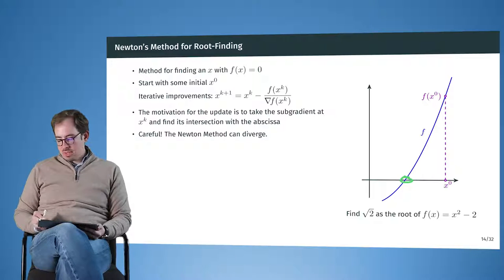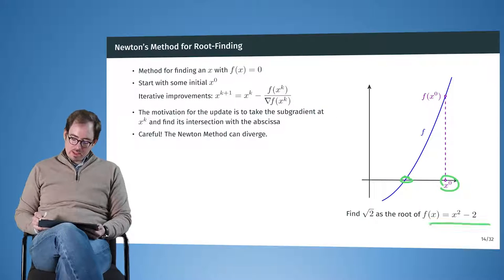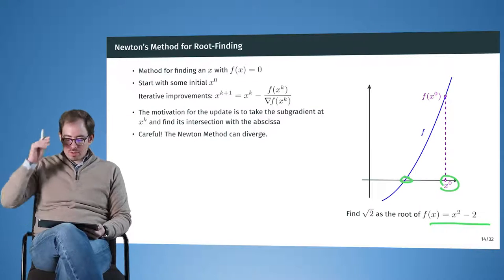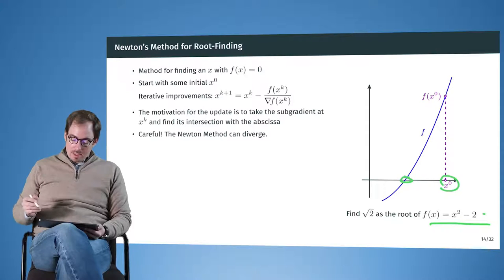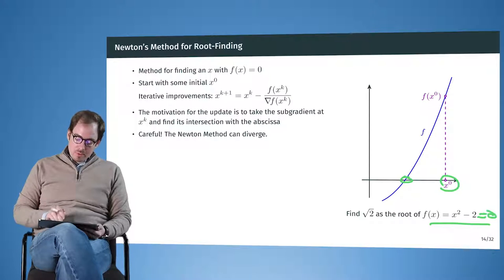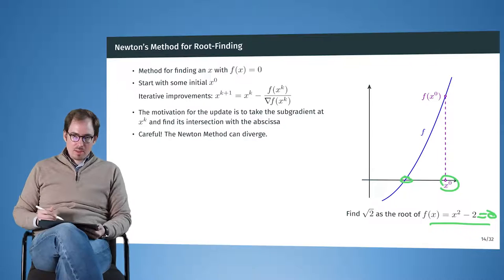So we have here the function x squared minus two, and at the position where this function is zero, we have exactly x equals the root of two. And we want to get closer and closer to the root of two. So what is done? We are at the place x zero, we have f of x zero, so the height of the function at that point.